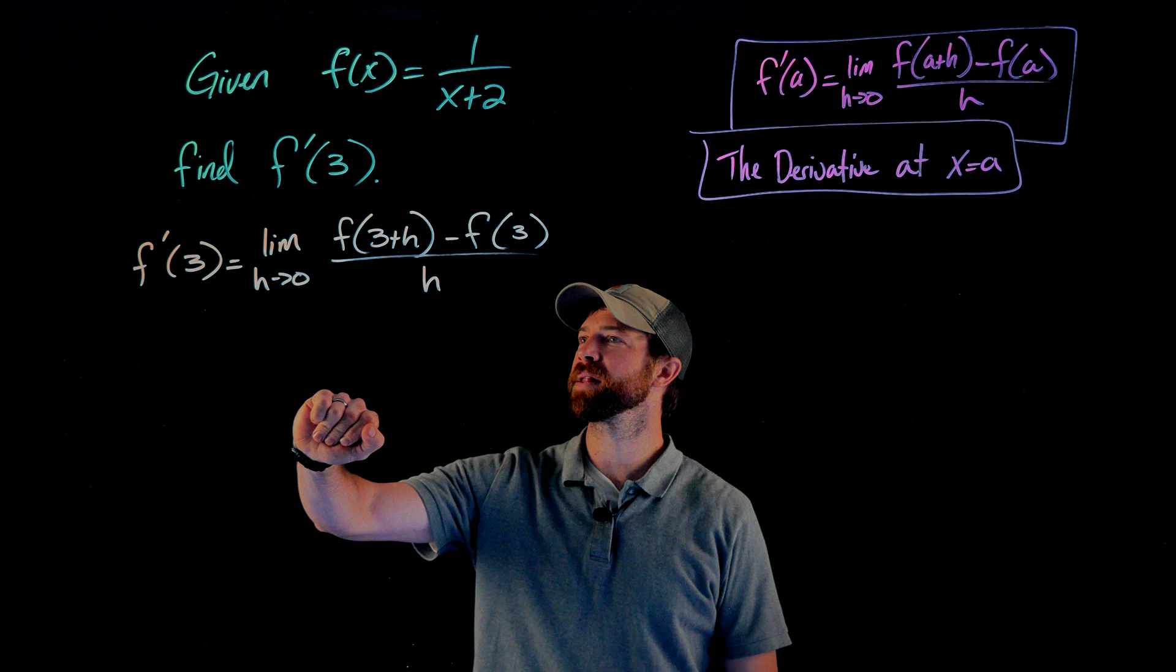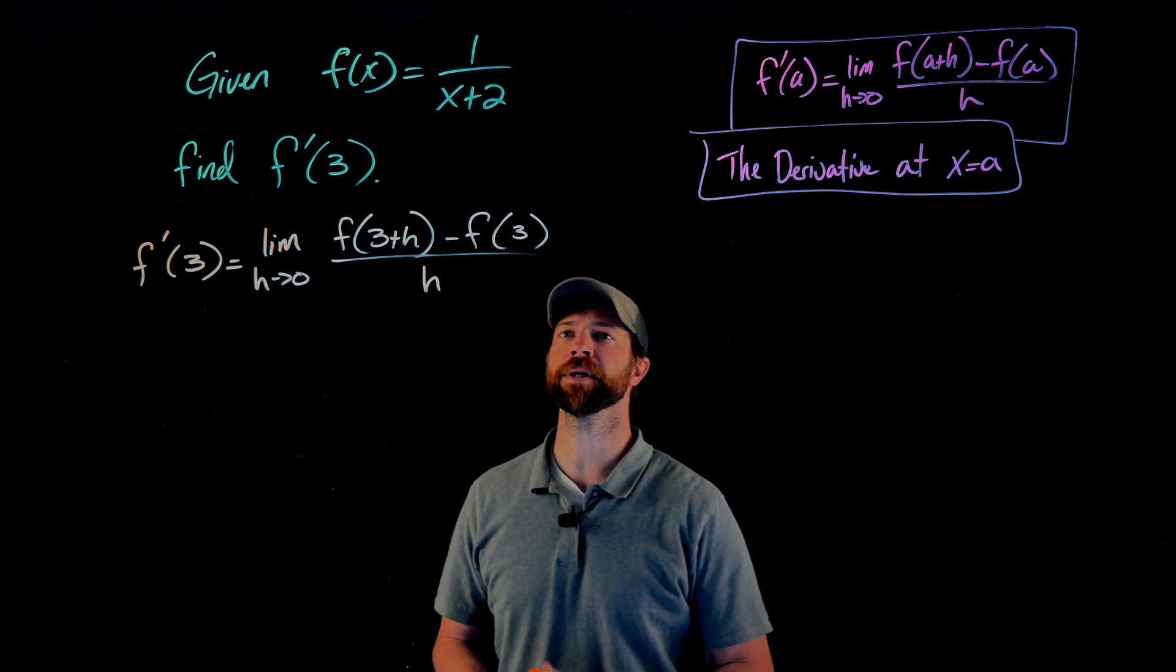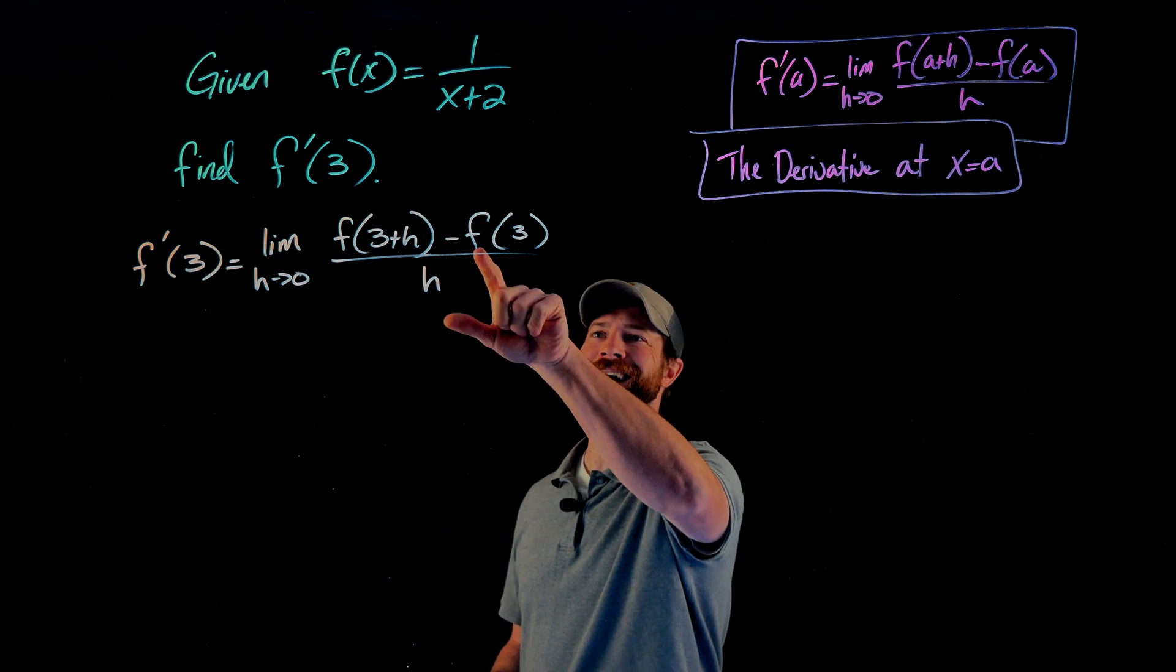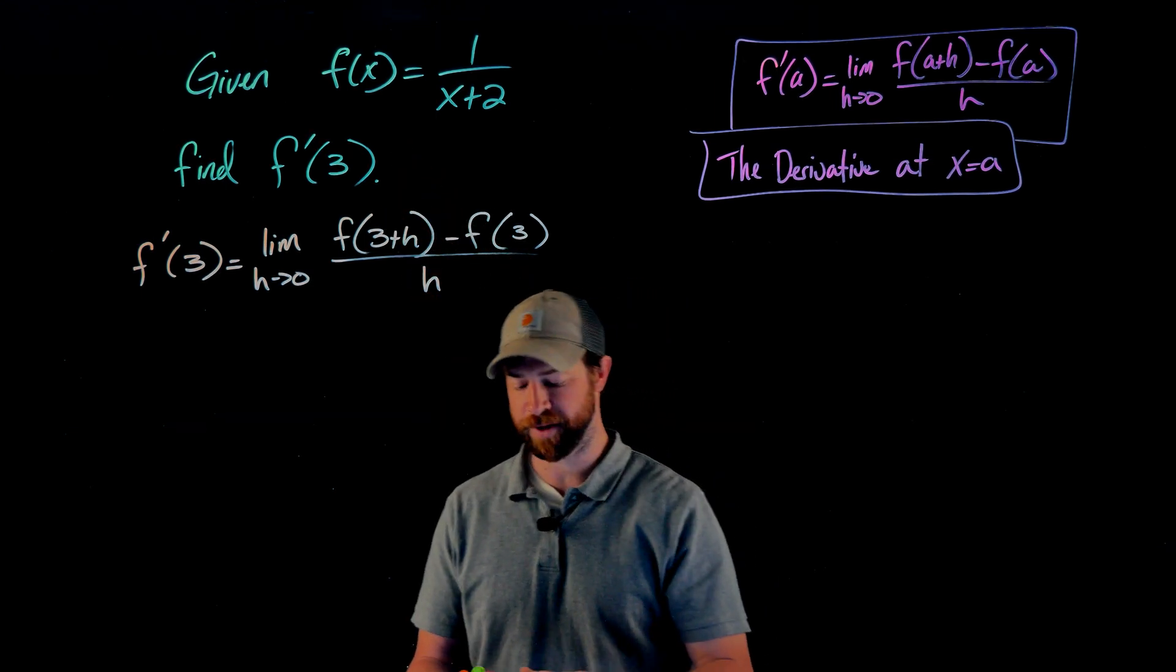So I've set up here the f prime of 3 definition by plugging in 3 for this a value here. The one thing I wanted to say on the side, this f of 3, that's just evaluating our original function at the x value of 3.